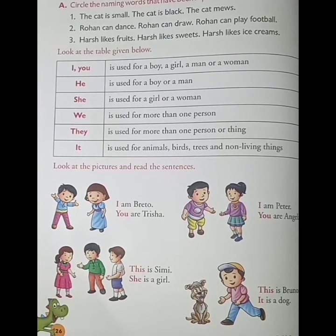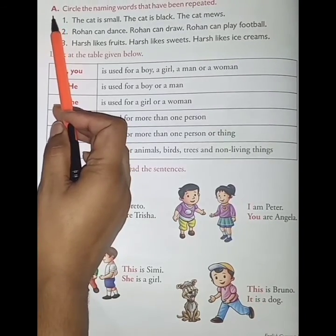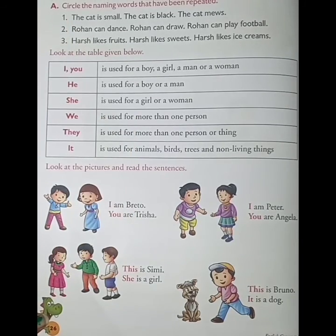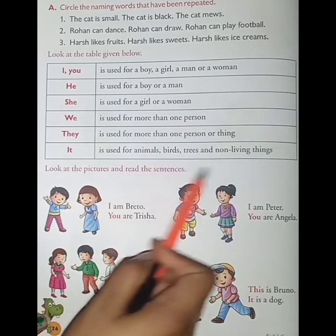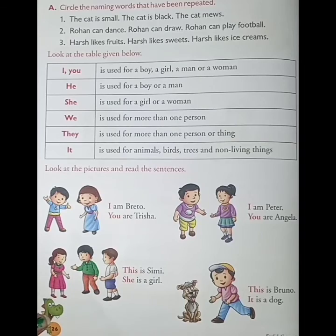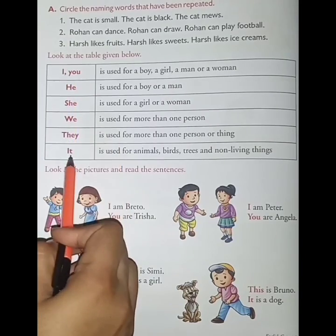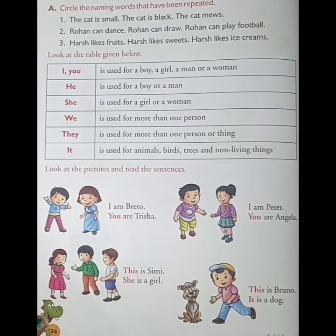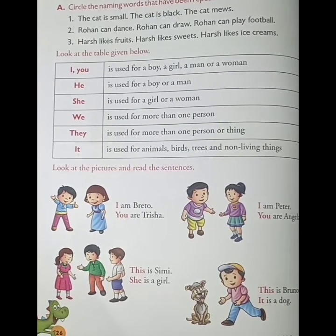That's it for today. We will continue the rest of this chapter in our next class. Till then, you have to do Exercise A in your textbook — aapko apni book mein Exercise A karni hai. Then you have to draw the pronoun table in your notebook and write all the pronouns and their uses. Learn them as well. I hope you all understood today's class. If you have any query, please ask me. Take care, have a nice day, thank you.